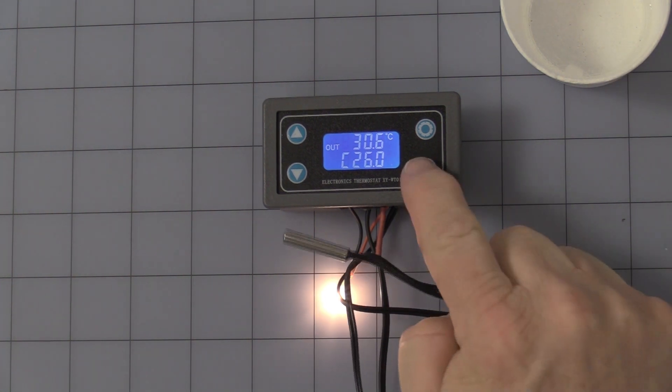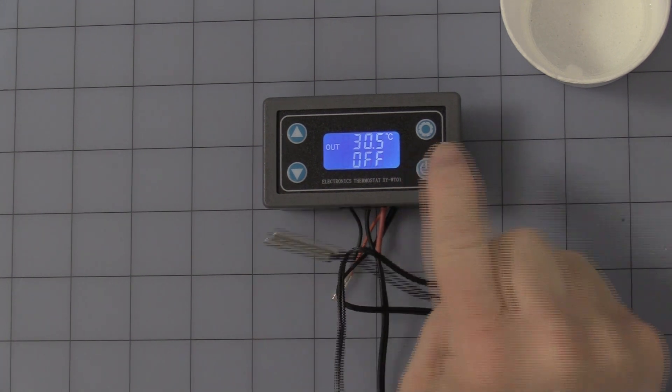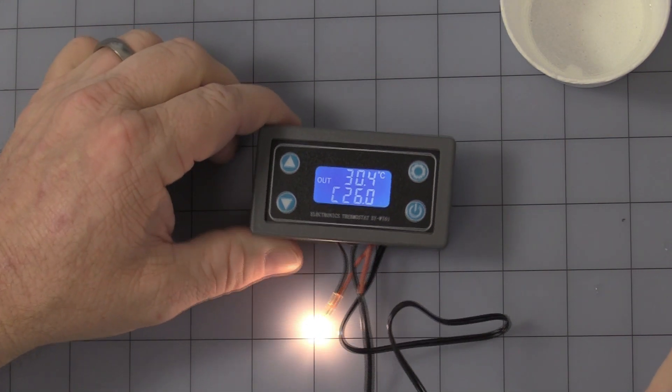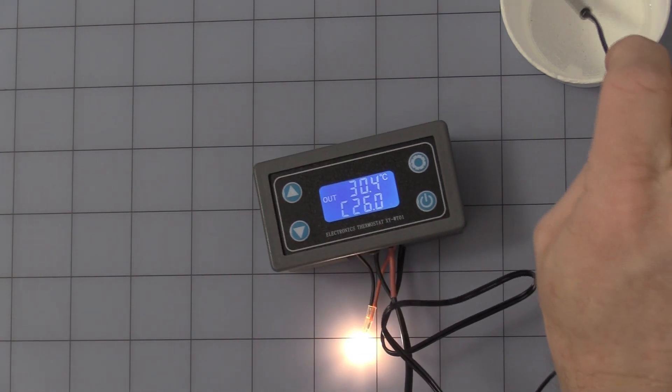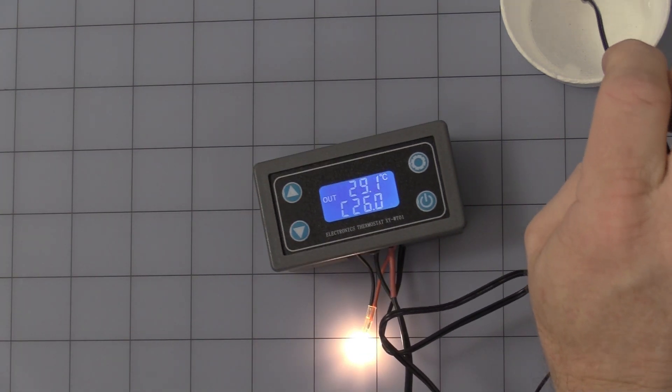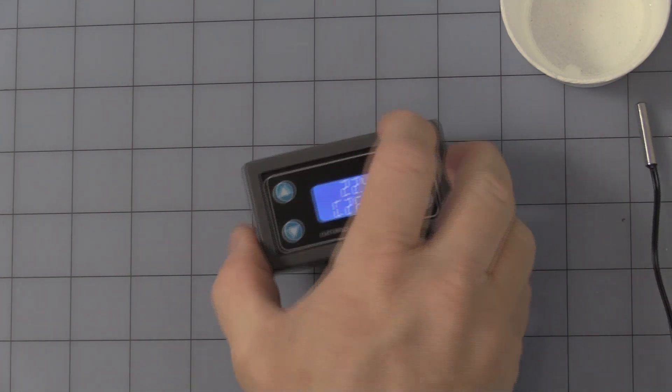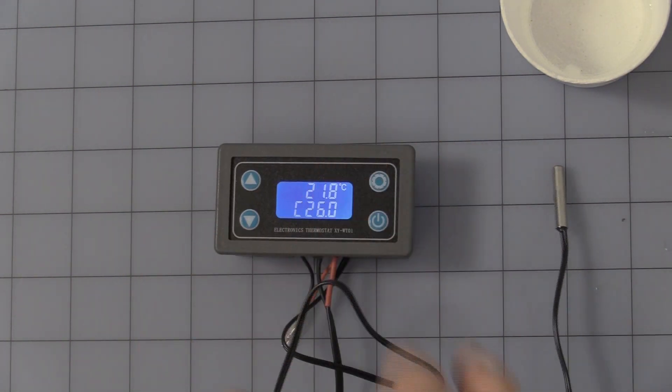So the relay turns on. You can automatically say turn it off, and that is the basic functions of the unit. So let's just get it to turn off here. Once it gets down below 26 turns off. Okay, that is the part. Thank you for watching our video.